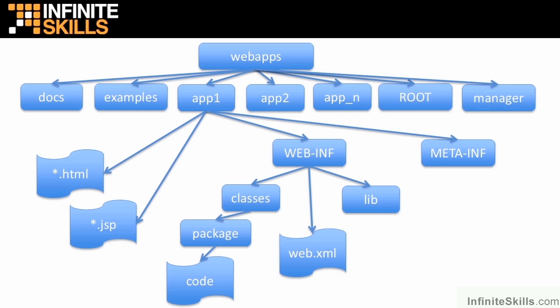Underneath the classes folder, you'd have the company folder, then the project name folder, then servlets, and then under the servlets folder you'd have your compiled code — matching the applications we've built to this point. The lib folder would have any additional libraries we want to reference, such as a custom library programmed in a JAR file or anything else we need to include.